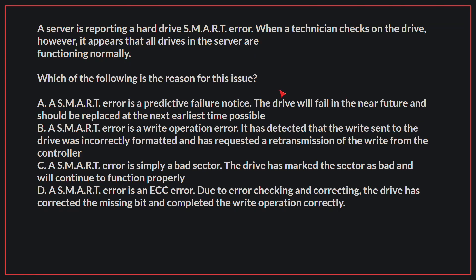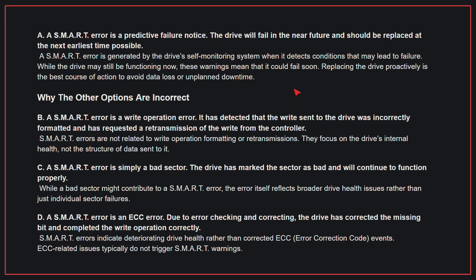A server is reporting a hard drive SMART error. When a technician checks on the drive, however, it appears that all drives in the server are functioning normally. Which of the following is the reason for this issue? The correct answer is A: A SMART error is a predictive failure notice. The drive will fail in the near future and should be replaced at the next earliest time possible. A SMART error is generated by the drive's self-monitoring system when it detects conditions that may lead to failure. While the drive may still be functioning now, these warnings mean it could fail soon — replacing the drive proactively is the best course of action to avoid data loss or unplanned downtime.